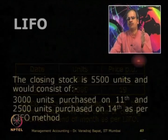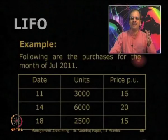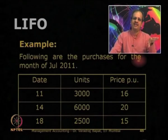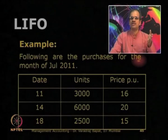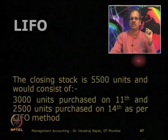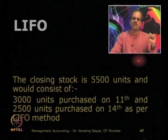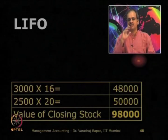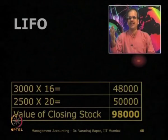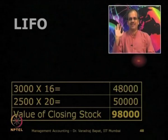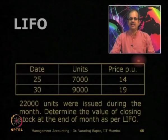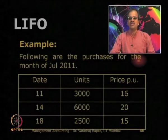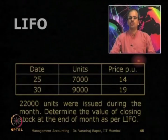The entire stock of the 11th is still in hand, and part of the stock of the 14th — that is 2,500 units — are in hand. So 3,000 units purchased on the 11th and 2,500 units purchased on the 14th, as per the LIFO method, gives a valuation of 3,000 at ₹16 and 2,500 at ₹20. The value of closing stock comes to ₹98,000. Under LIFO, the stock being valued is not close to the latest prices.